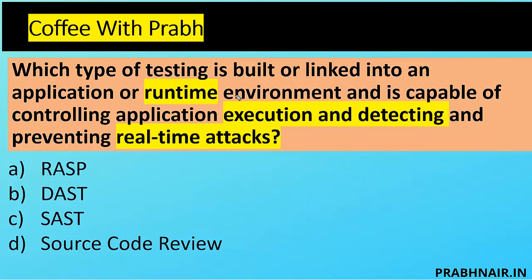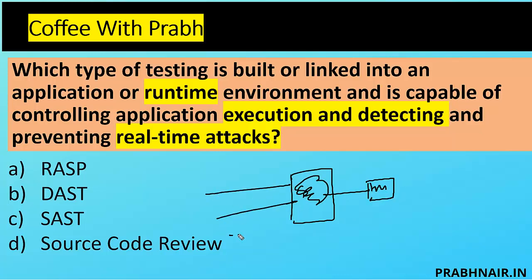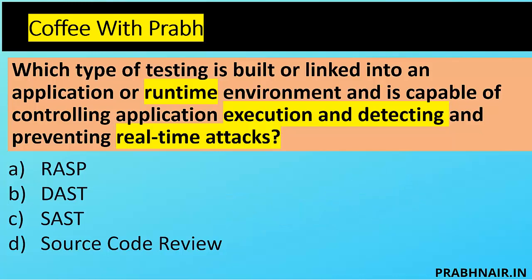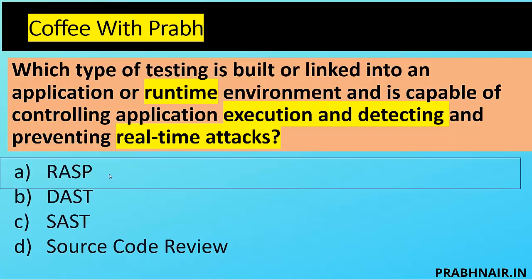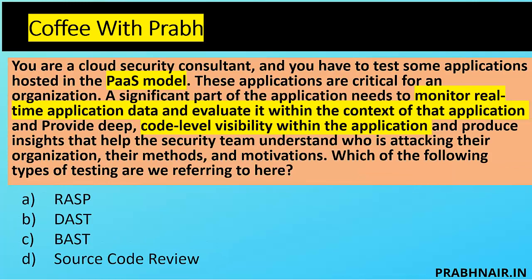RASP is the answer because the question talks about a runtime environment, controlling application execution, and detecting and preventing real-time attacks. In RASP, there is a plugin integrated with the application — used in DevOps and CI/CD pipelines — that provides output on whatever is happening in the application: how many users are accessing it, every input coming in. In a running state we can identify bugs. The answer is A — RASP, Runtime Application Security Protection.